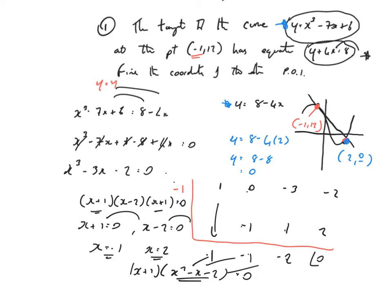Let's summarise. To get points of intersection, the y-coordinates are equal, so we make y equal to y. Change the subject so it's written as y equals 8 minus 4x, then make y equal to y, bring across, and make equal to 0. That calls for synthetic division — remember the 0 coefficient. We know minus 1 works because it's already proven to be a point of intersection. The quotient is x squared minus x minus 2; factorise further and you get x equals 2 as the second solution. Substitute x equals 2 back in to get y equals 0.